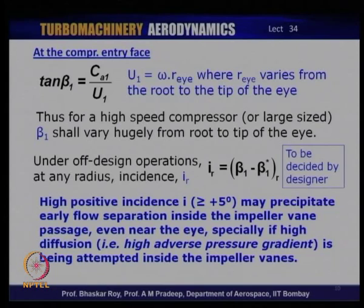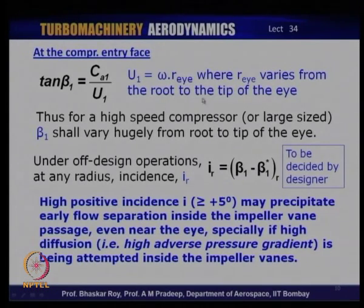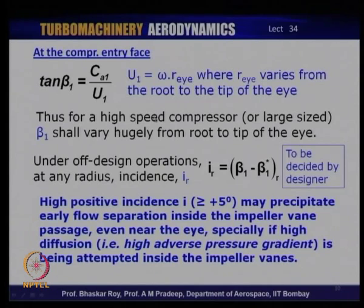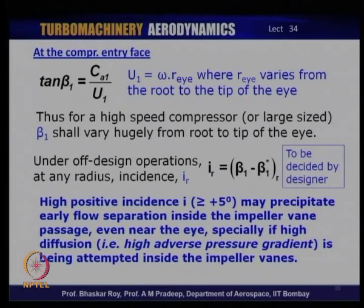Let us start at the beginning of the centrifugal compressor where you need to create the inlet flow and the inlet vane shape. The flow comes in with tan β₁ = Ca₁/U₁, where U₁ = ω·r of the eye — which varies from the root to the tip of the eye. So U₁ and β₁ both vary, and as a result you get a twisted inlet eye. The eye of the impeller is actually fairly highly twisted in a high-speed compressor or in a large industrial compressor, and this twist has to be factored into the vane shape — so the impeller entry is often a twisted vane.